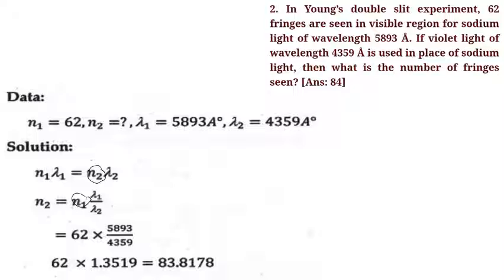n1 is equal to 62. Lambda 1 is equal to 5893. 62 times 5893 divided by 4359 equals 62 times 1.3519 equals 83.8178, approximately equal to 84. So number of fringes is 84.